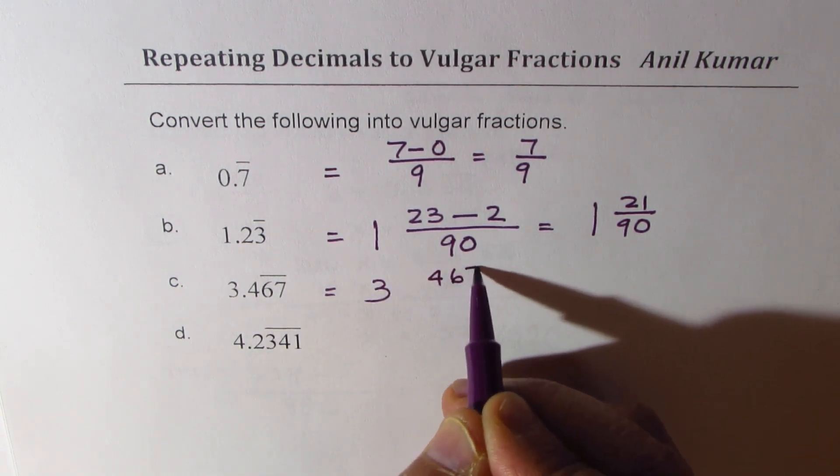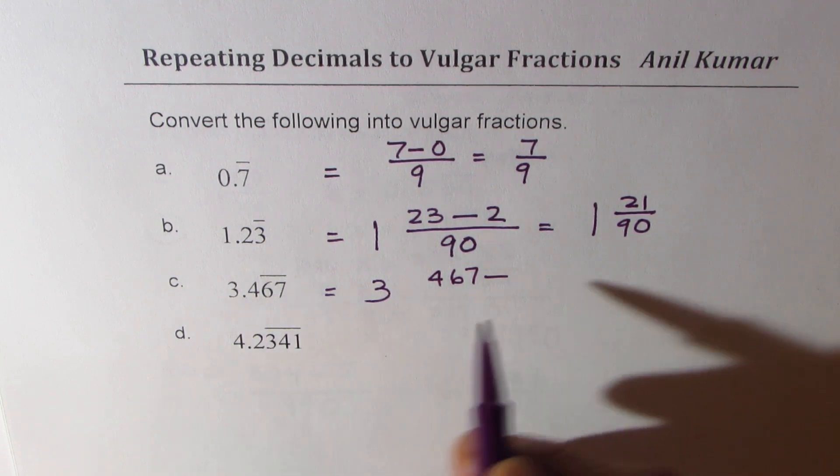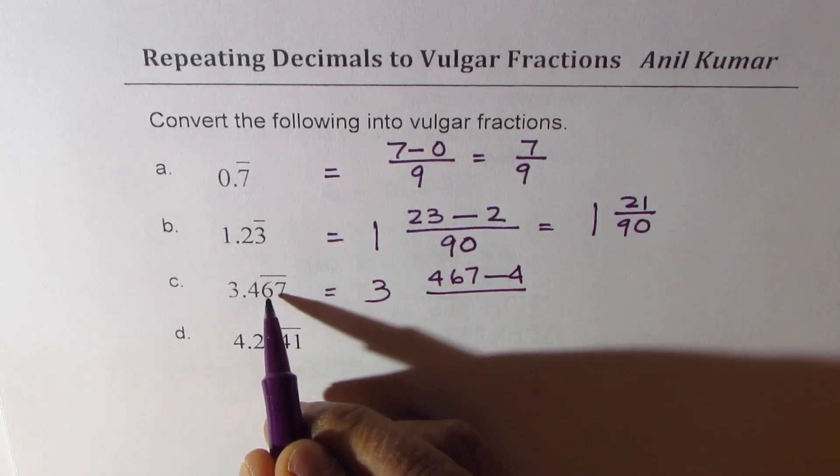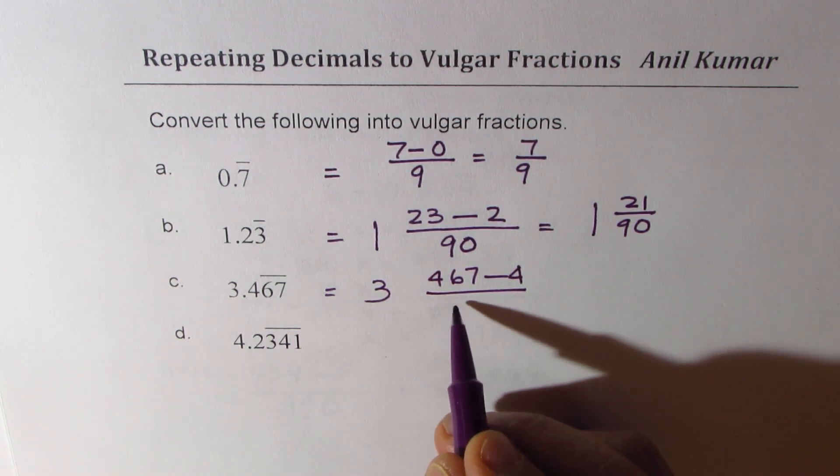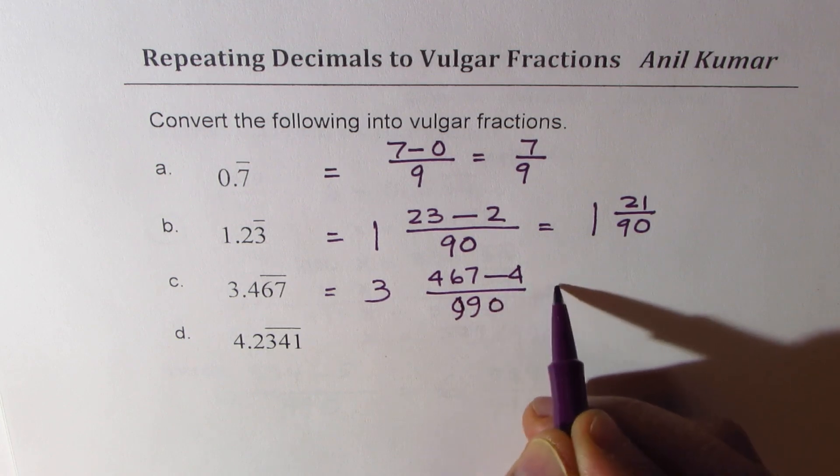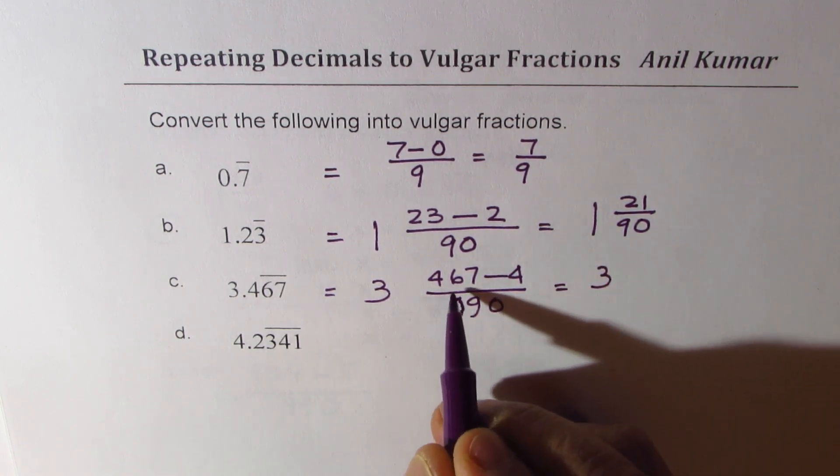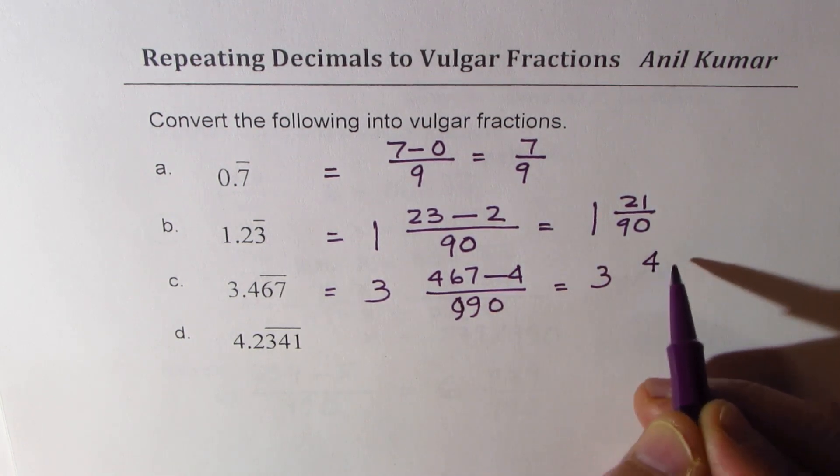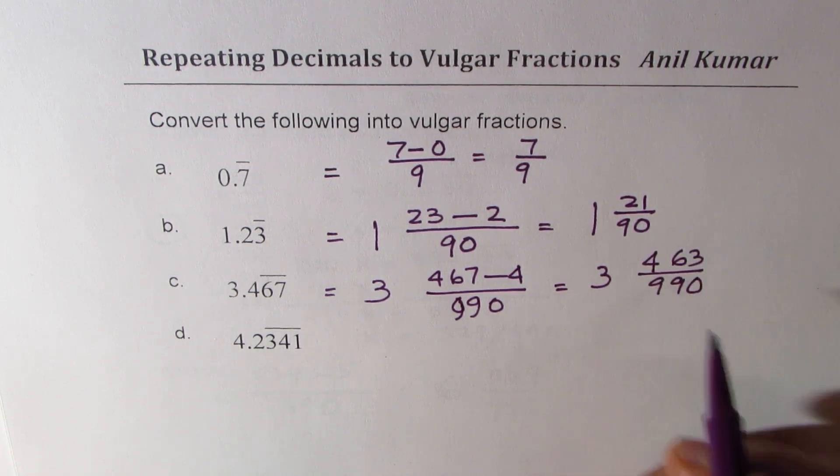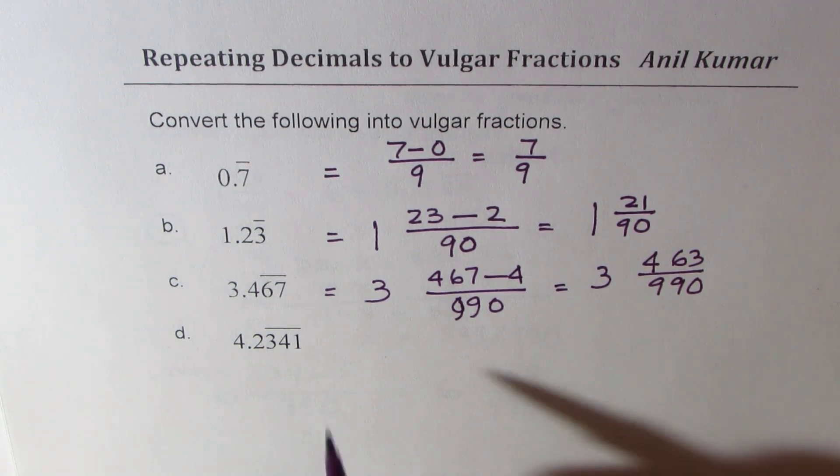I hope you got the process. Now let's do the last one. 4 here, 2, 4 and 1 these are repeating. Anyway in the numerator you write 2341 and then take away the number which is not repeating which is 2, divided by how many 9's? 3 nines.